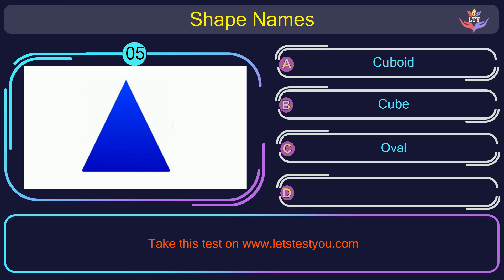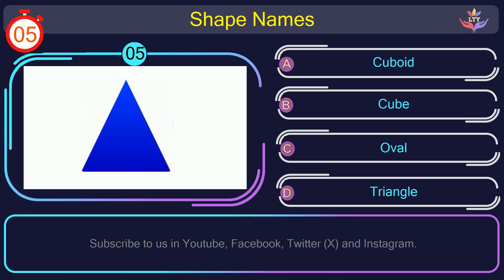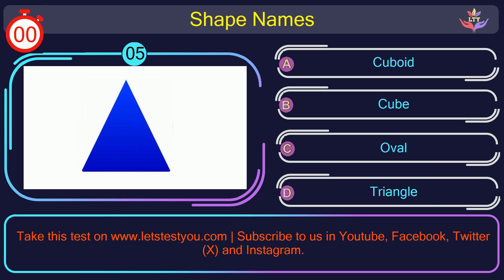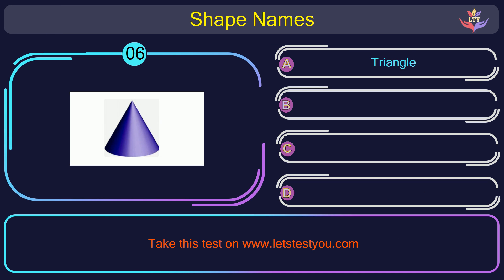Question number 5. Could you recognize the name of the shape in this picture? The correct answer is option D. Triangle. Triangle is a polygon with three sides and three angles.